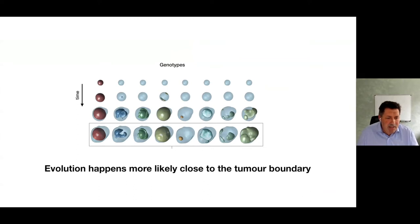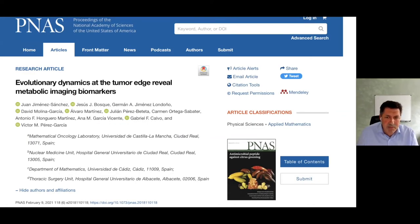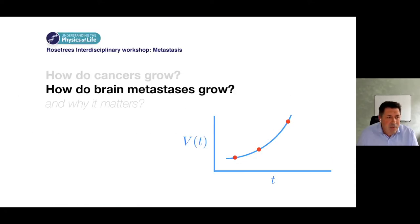By the way, it's very interesting that evolution happens and is more likely close to the tumor boundary. The tumor boundary becomes the hotter area of the tumor from the metabolic point of view. That's something you can corroborate using molecular imaging data. If you like this topic, there's also this paper about where evolution happens in this mathematical model.